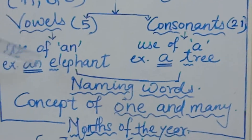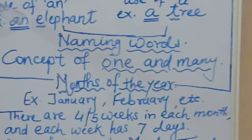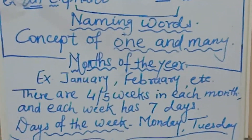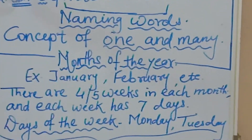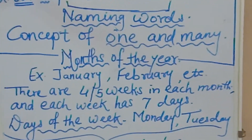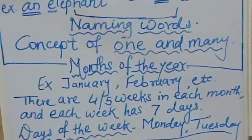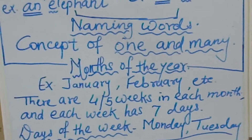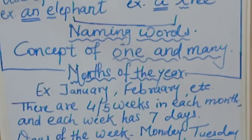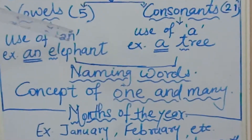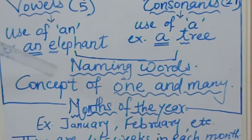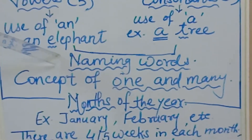Now — elephant, tree, chair, boy, doctor, patient, school. These all words in grammar are known as naming words.